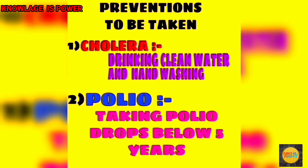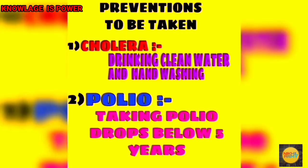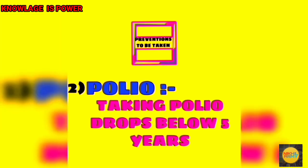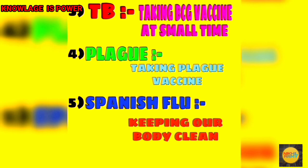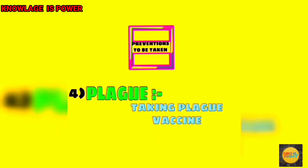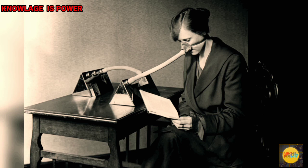Now let's know the preventions to avoid these diseases. Number one, cholera: drink clean water and wash hands. Number two, polio: take polio drops below five years of age. Number three, TB: take the BCG vaccine at birth or at a young age. Number four, plague: take the plague vaccine when infected. Number five, Spanish flu: keep the body clean, maintain distance, and wear a mask.